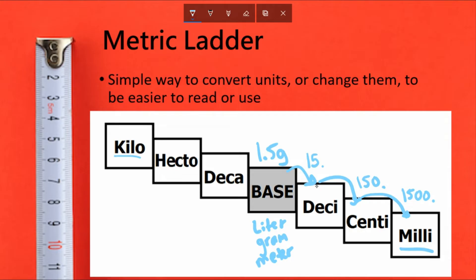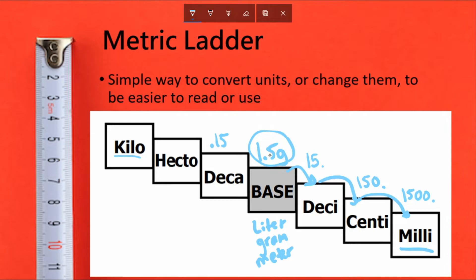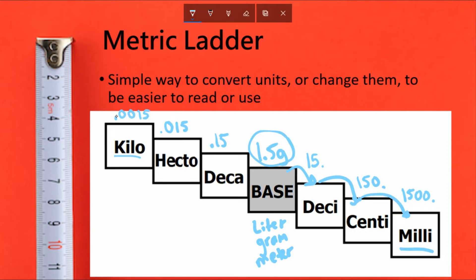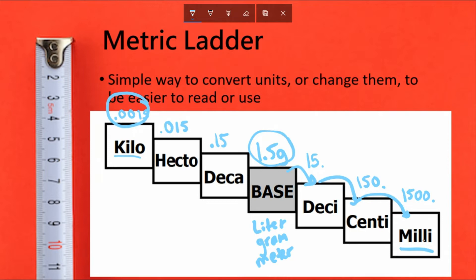Now say we want to go the opposite direction — from 1.5 grams going up. The decimal point is actually going to move to the left. So 1.5 becomes 0.15 at decagrams; moving left again gives 0.015 at hectograms; and one more step gives 0.0015 at kilograms. So 0.0015 kilograms is the exact same thing as 1,500 milligrams.